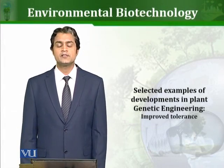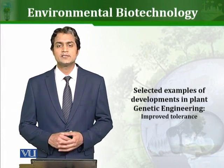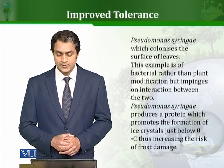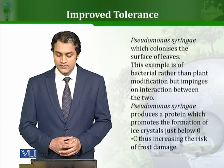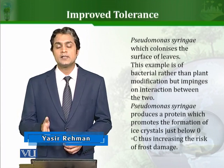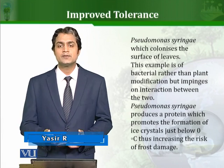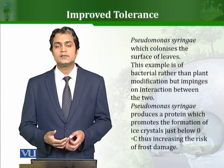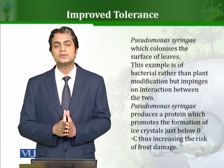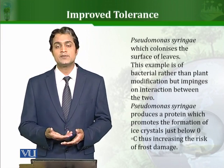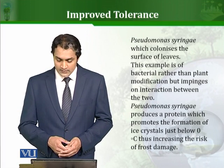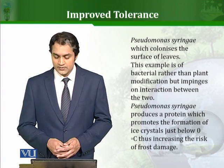Let's talk about some examples of genetic engineering of plants aimed to increase the tolerance of plants against certain circumstances. Pseudomonas syringae, a bacteria, colonizes the surface of leaves. This example is of bacterial rather than plant modification, but impinges on the interaction between the two. We can modify the natural flora of plants, which indirectly helps the plants to survive in certain circumstances.